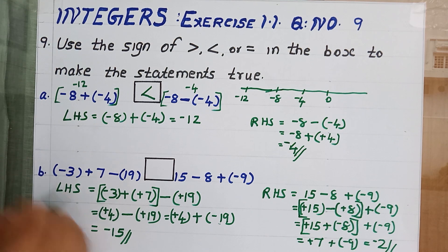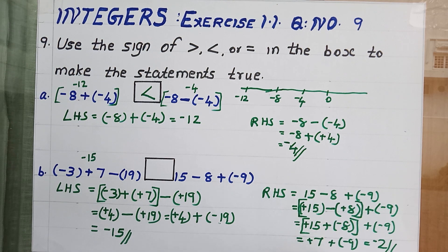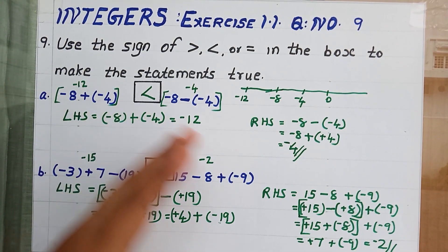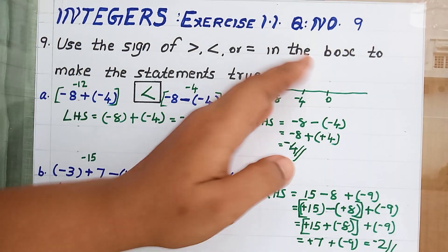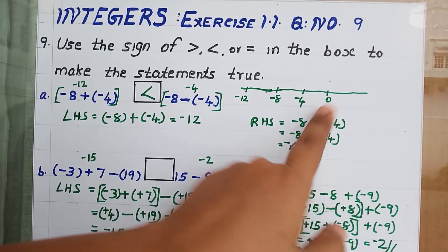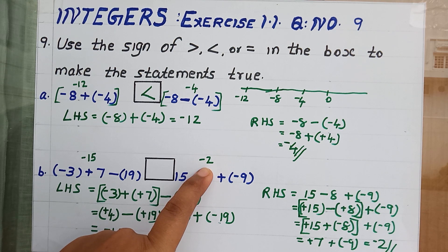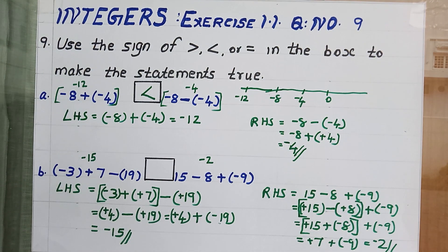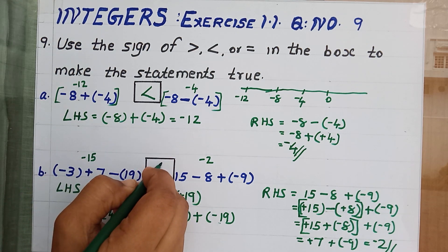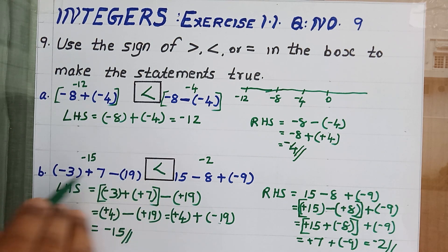Assigning the values: LHS is minus 15 and RHS is minus 2. On the number line, minus 15 lies on the left side and minus 2 lies on the right side. So minus 15 is lesser and minus 2 is greater, and we assign the less than sign here.